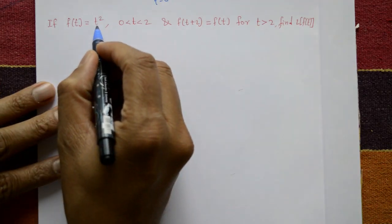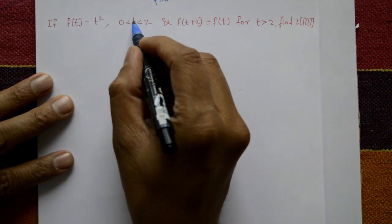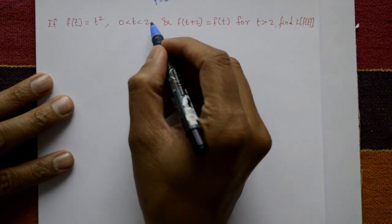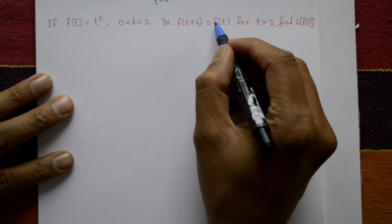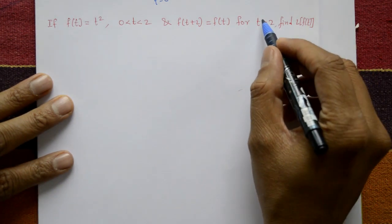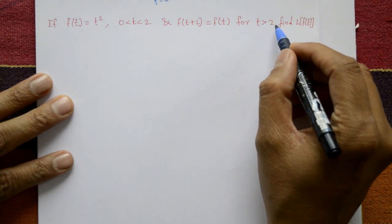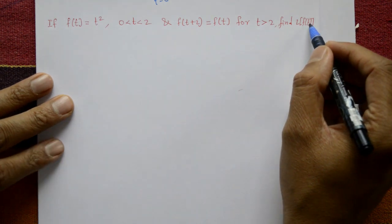If f of t is equal to t squared, where 0 less than t less than 2, and f of t plus 2 is equal to f of t for t greater than 2, find the Laplace transform of f of t.